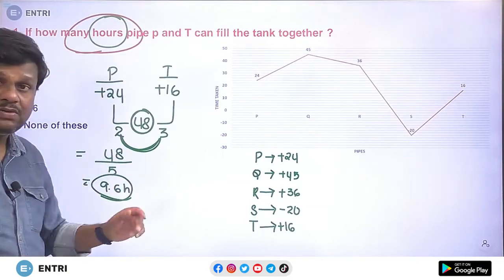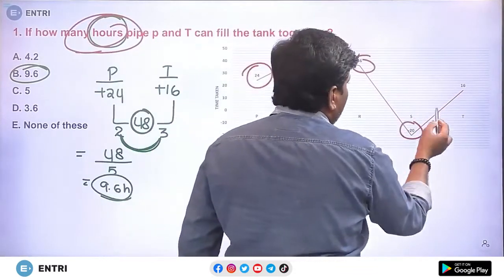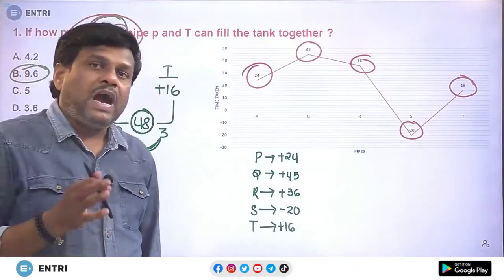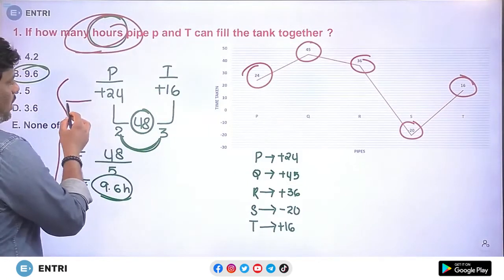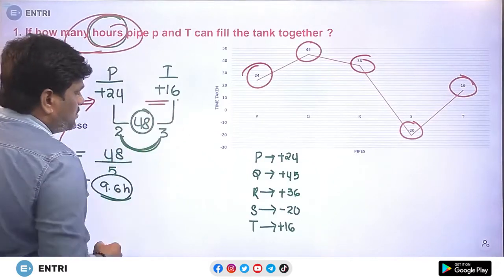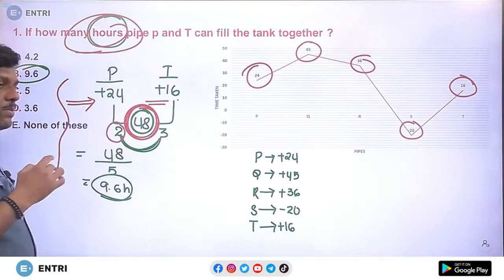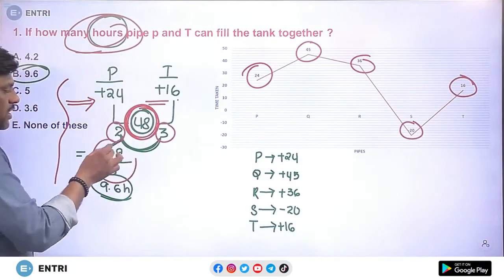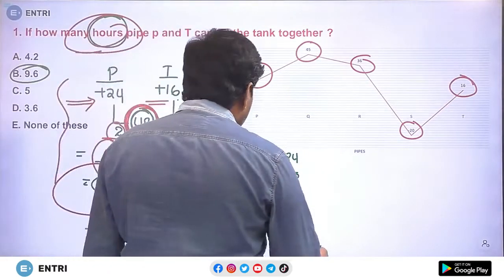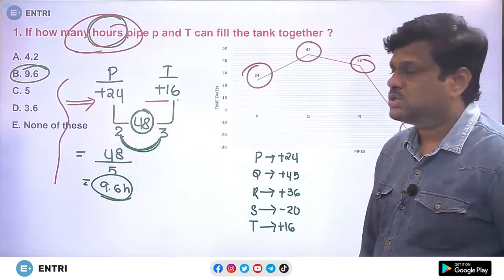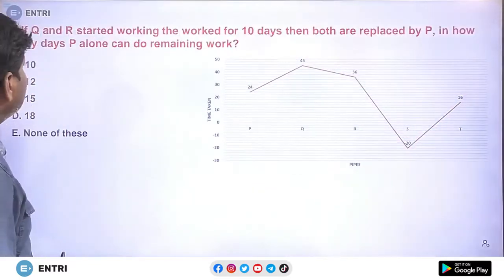In this question, since the parameter mentioned is hours, all values are taken in hours. P is 24 hours and T is 16 hours; total work is 48 units. P fills 2 units per hour and T fills 3 units per hour. Combined efficiency is 5 units per hour. 48 divided by 5 gives 9.6 hours. Option B is absolutely the right answer for this question.